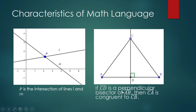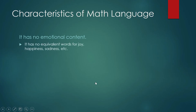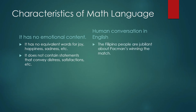'If CD is a perpendicular bisector of AB, then CA is congruent to CB.' Mathematics language has no emotional content — it has no equivalent words for joy, happiness, or sadness, and it does not contain statements that convey distress or satisfaction. Let us compare it with human conversation in English: 'The Filipino people are jubilant about Pacman's winning the match'; 'The Filipino people mourn the passing of Fernando Poe Jr.'